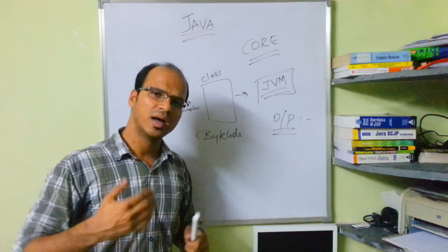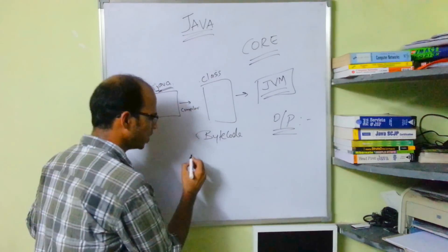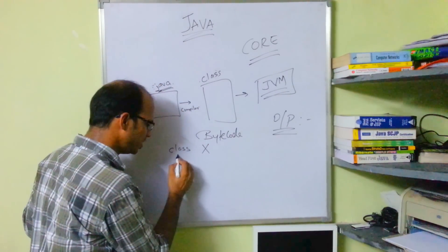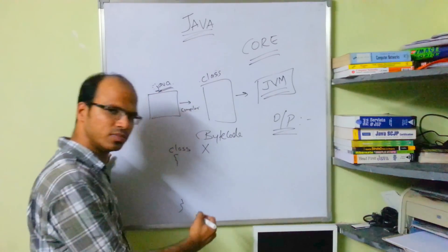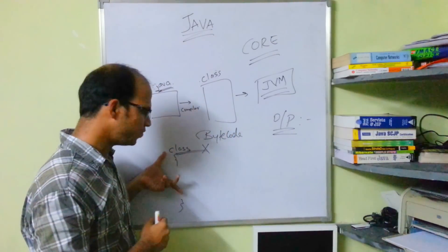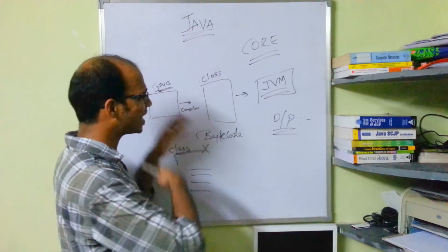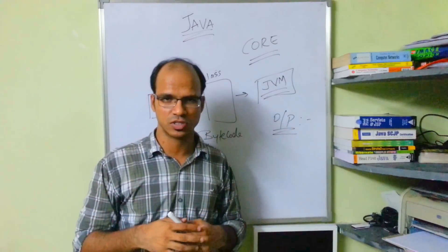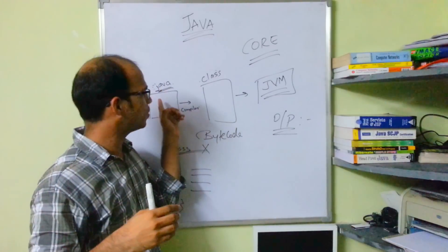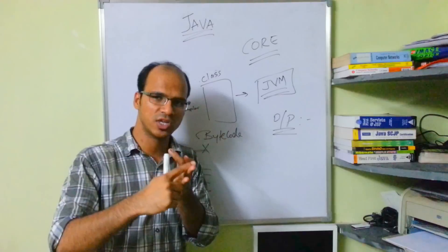So first you create a .java file, then you compile it to get a .class file, then you run it on JVM. How to do all this we will see in practical implementation. When you create a simple Java application you require a class. Let's suppose we have class X — in this class you should have something. When you talk about a Java application you have to create a class, and in that class you will have data members like variables or some methods. Theoretically: you create a .java file, compile to a .class file, and run it on JVM.